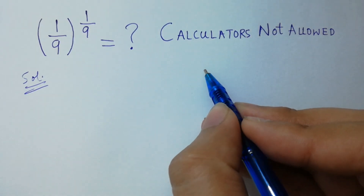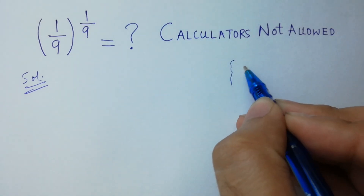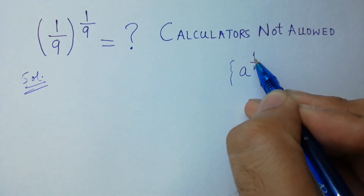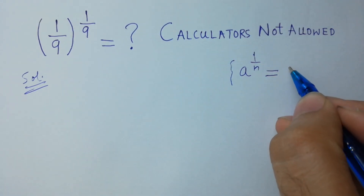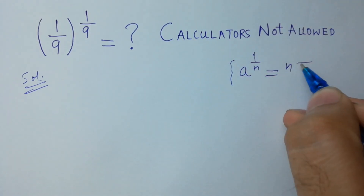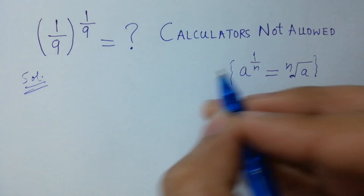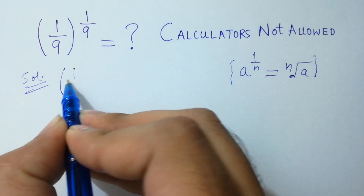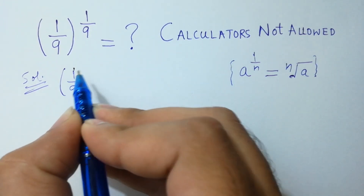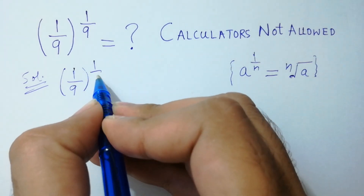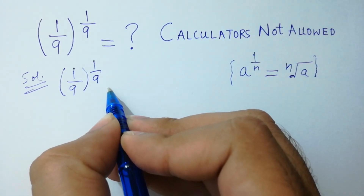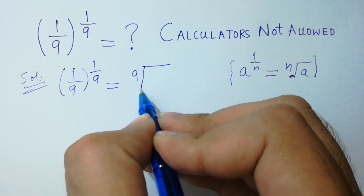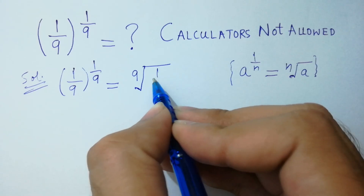Since a to the power 1 over n equals n root a, so 1 over 9 to the power 1 over 9 will be equal to 9 root of 1 over 9.